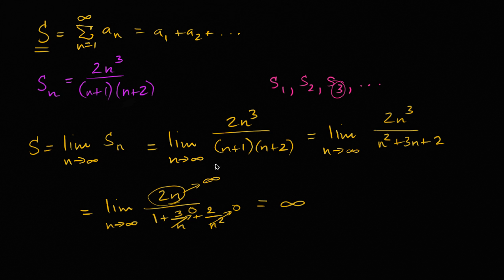And since the limit of the partial sums goes to infinity, that means that this infinite series is not going to be a finite value. It's just going to diverge. So this character right over here is going to diverge. In order for it to have converged, this limit should have been some finite value. So hopefully that makes sense.